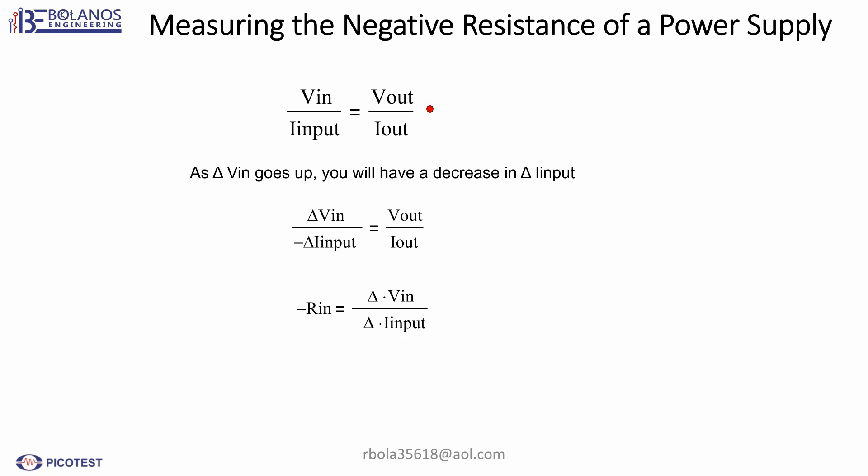Basically, if you vary your input voltage, let's say you put a wiggle and the input voltage goes up, if you have a good feedback system, your output voltage is going to be the same. And if your output voltage is the same, your current is going to be the same. Now what about the input? Specifically what about Iinput? What happens? Well, as Vin goes up, your Iinput is going to decrease so you keep the same power.